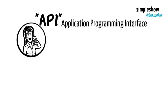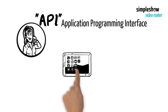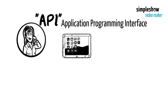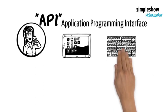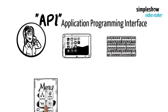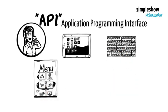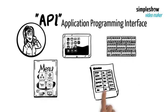Guess what? The application waiter is the API — Application Programming Interface — interfacing with other applications through programming. The application menu is the API document, listing your application's functions and how to request them.